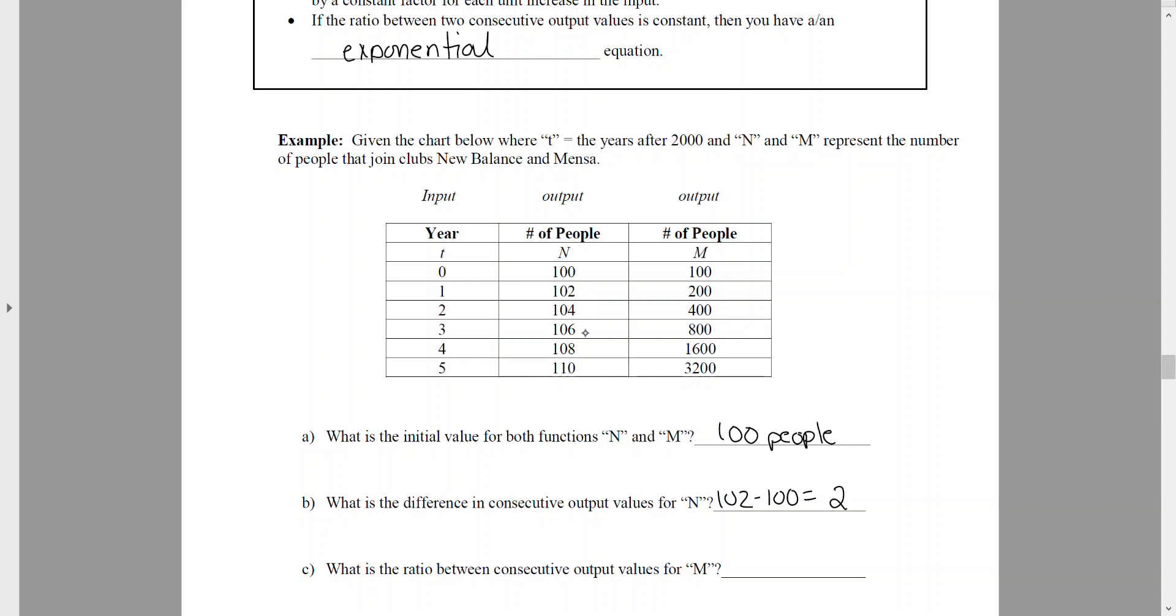So 104 minus 102, or 106 minus 104. They all have a difference, 110 minus 108 of two. So the difference in our consecutive output is two.